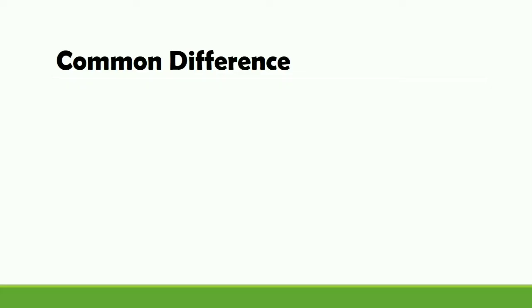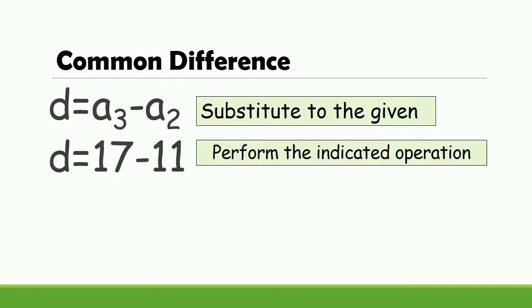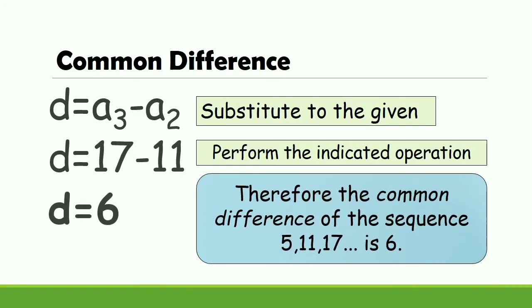To check if the common difference is constant, let's solve for d is equal to a sub 3 minus a sub 2. Substituting the given: d is equal to 17 minus 11. Performing the indicated operation: 17 minus 11 is equal to 6. Therefore, the common difference of the sequence 5, 11, 17 is confirmed to be 6.